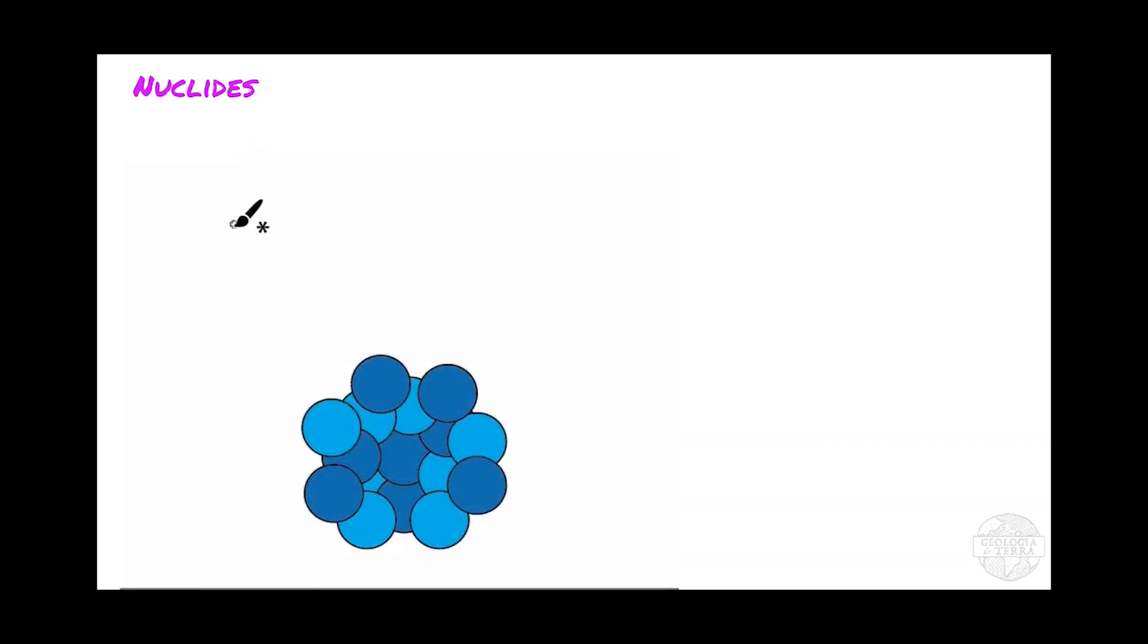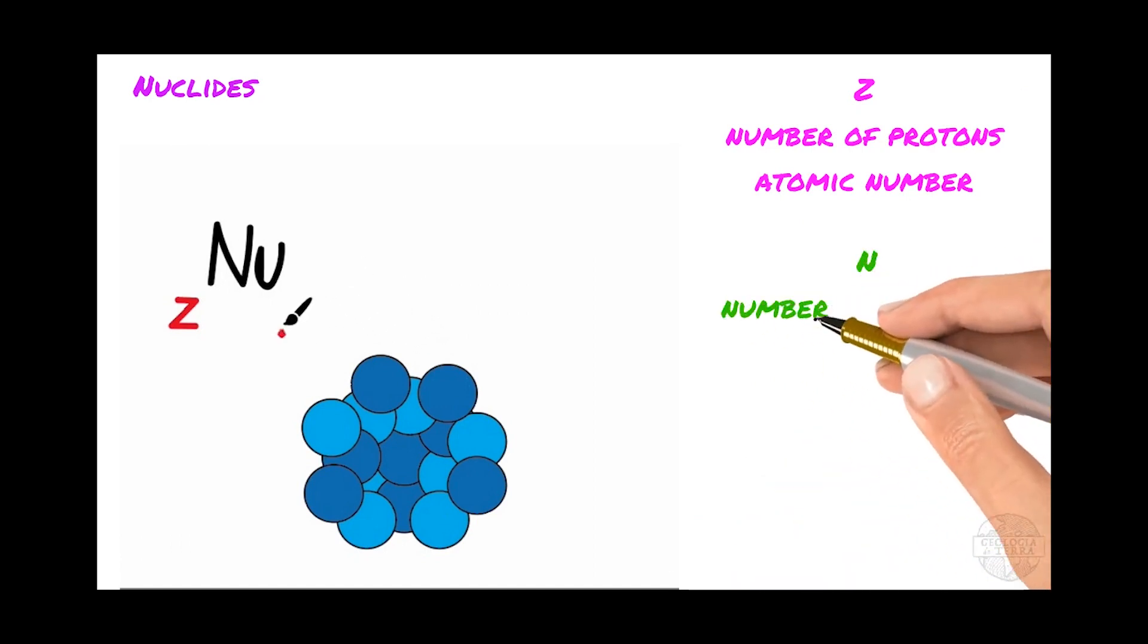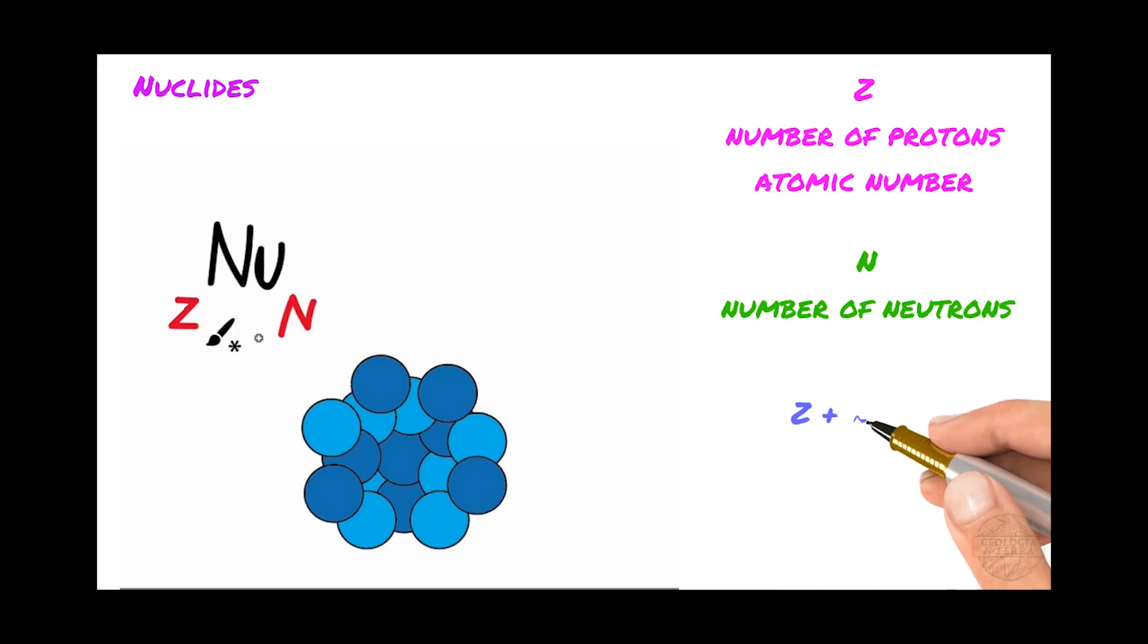A nuclide is an isotope-specific atom. This nuclide is defined by its number of protons, Z, which defines the element, and its number of neutrons, N, which defines the isotope of that element. The sum of protons and neutrons gives the atomic weight, A, and all of this is expressed by this notation.